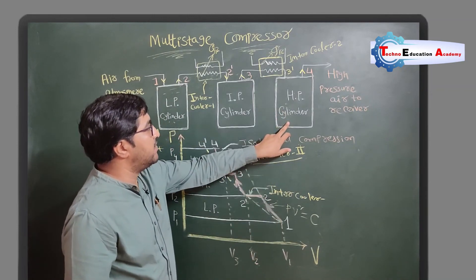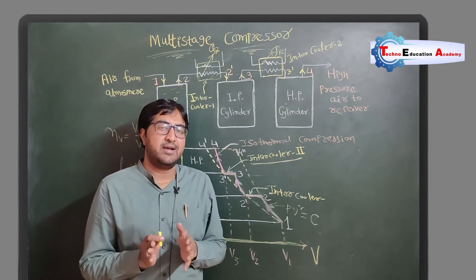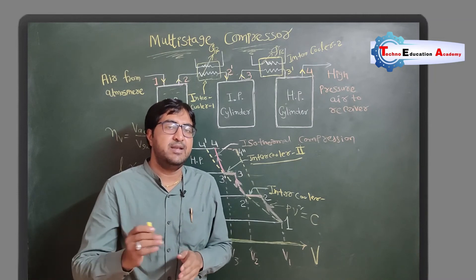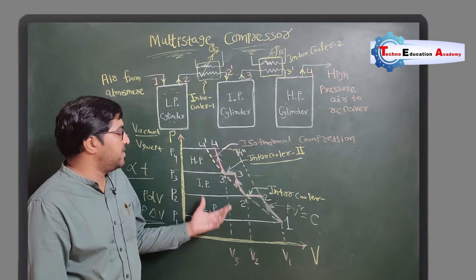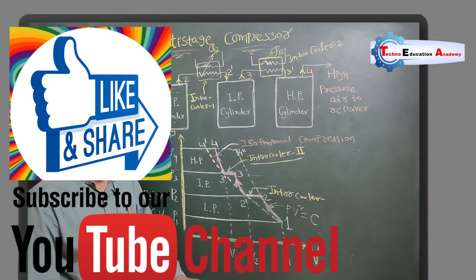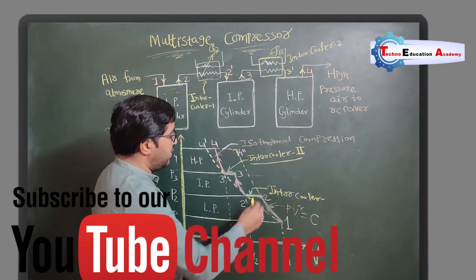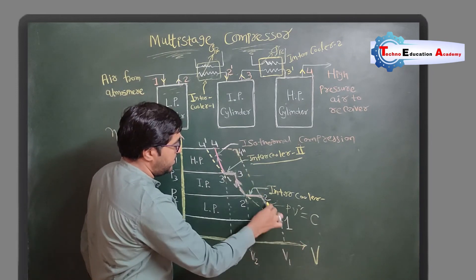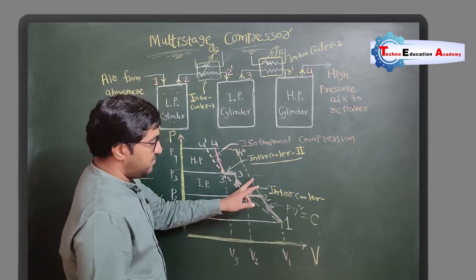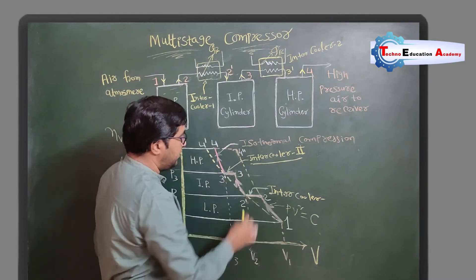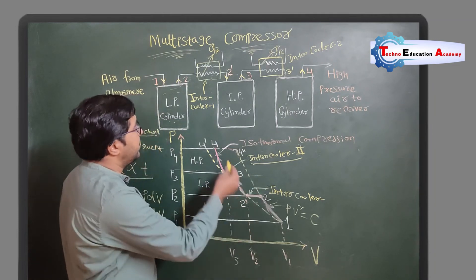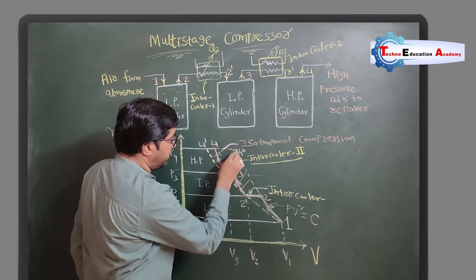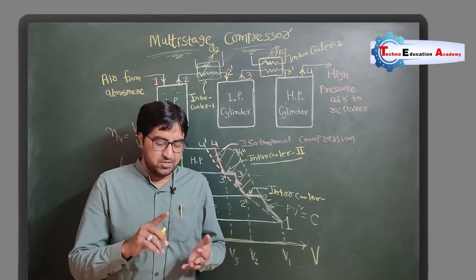After the second intercooler, the air is compressed again in the high pressure cylinder and delivered to the delivery tank, where it can be used in multiple applications. When we are not using an intercooler, the process follows 1 to a higher final point — requiring more work input to run the compressor. When we use intercoolers, there is a saving in work, which is clearly visible as the reduced area on the PV diagram. This is a key advantage of the multi-stage compressor.